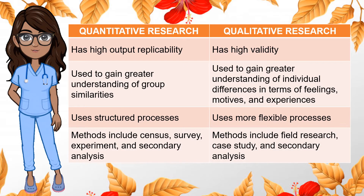Quantitative research has high output replicability, while qualitative research has high validity. Quantitative research is used to gain greater understanding of group similarities, while qualitative research is used to gain greater understanding of individual differences in terms of feelings, motives, and experiences. Quantitative research uses structured processes, while qualitative research uses more flexible processes. Lastly, quantitative methods include census, survey, experiment, and secondary analysis, while qualitative methods include field research, case study, and secondary analysis.